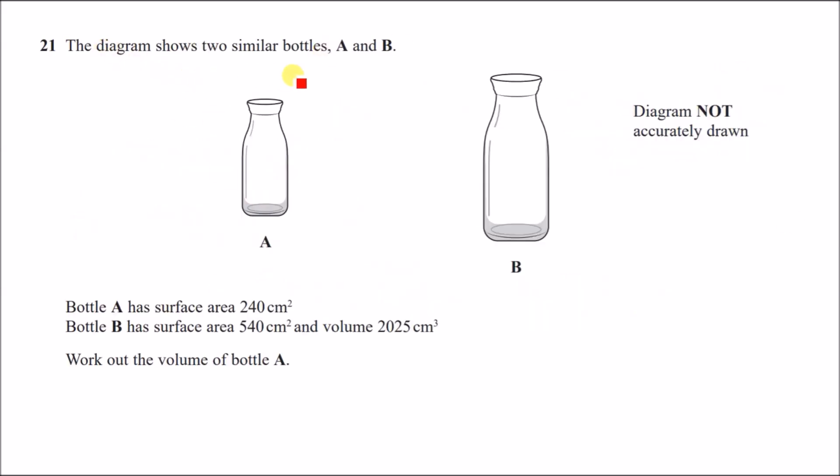So the diagram shows two similar bottles, A and B. Bottle A has surface area of 240 and bottle B has a surface area of 540 and a volume of 2025 centimeters cubed. Now here they want us to work out the volume of A. Alright, cool. So this is just a question about proportionality because they tell us they've got similar bottles. So it's kind of like similar triangles.